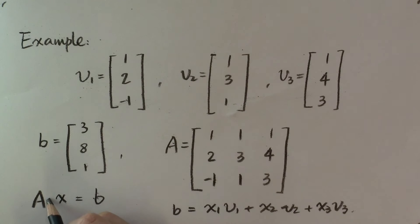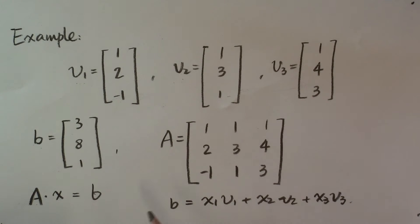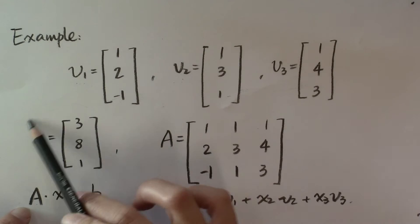And if it does not have a solution, then b is not a linear combination of these vectors. So now, I would like you to practice solving this linear system Ax = b, where A is this matrix and b is this vector.